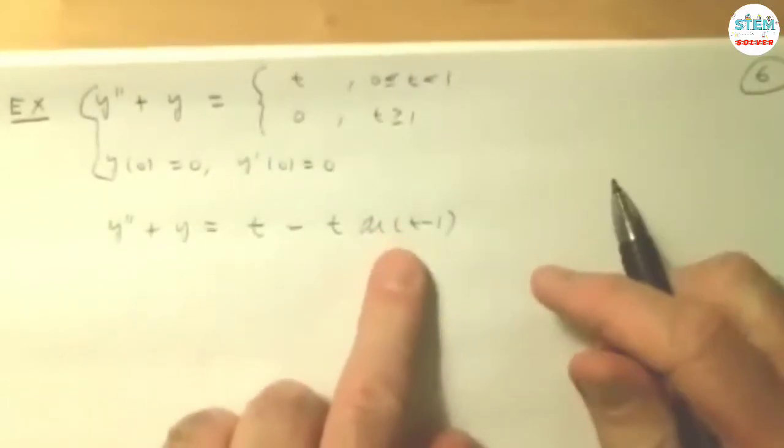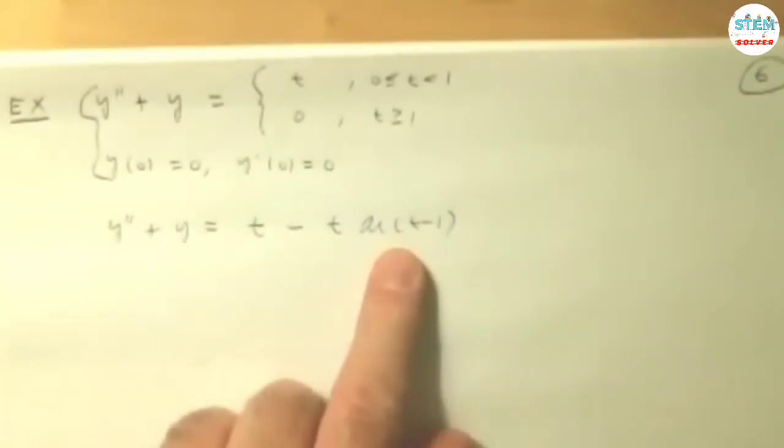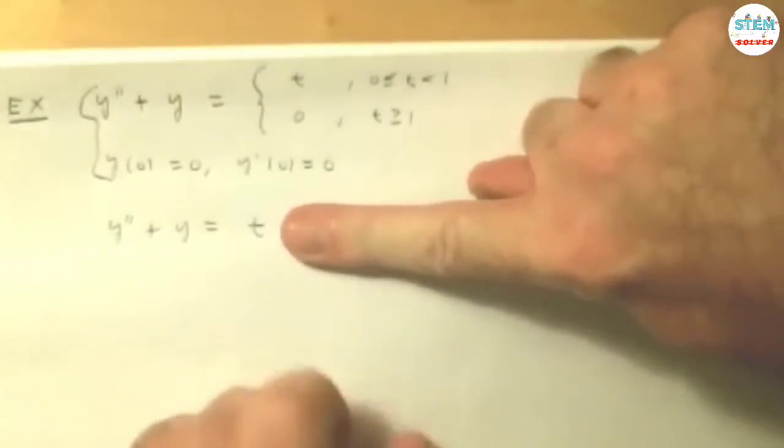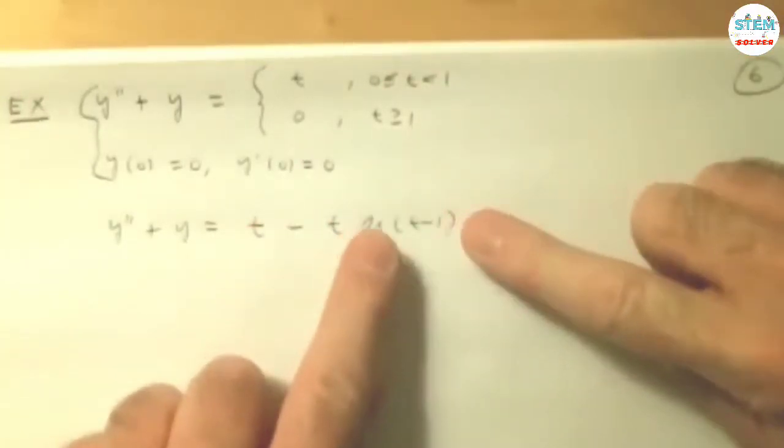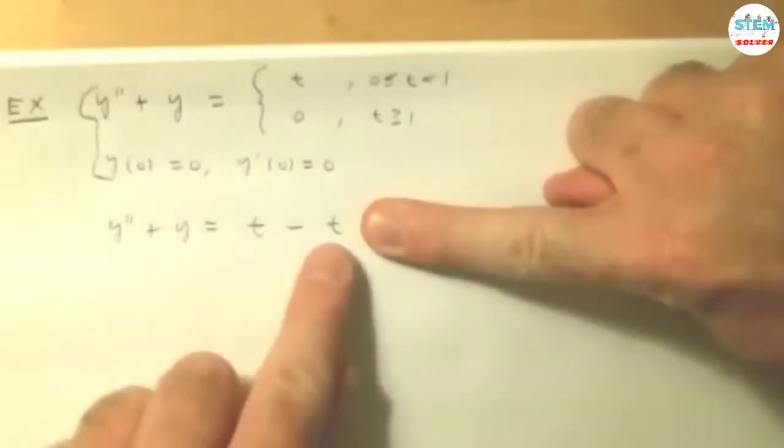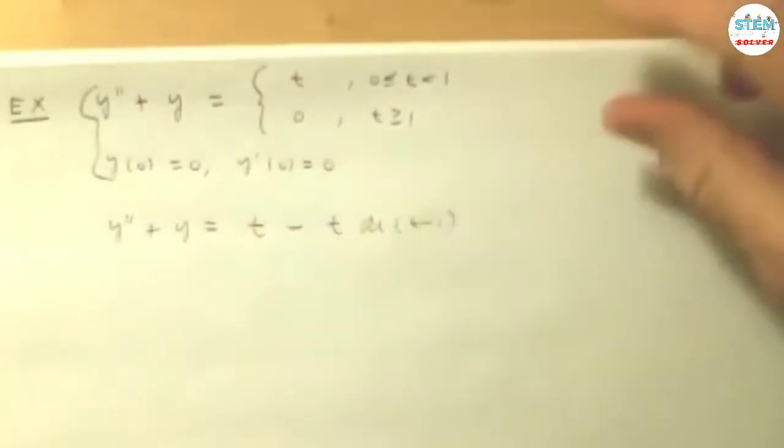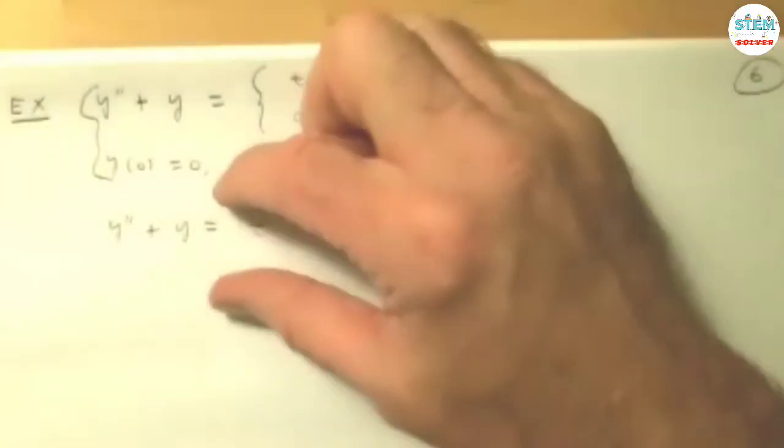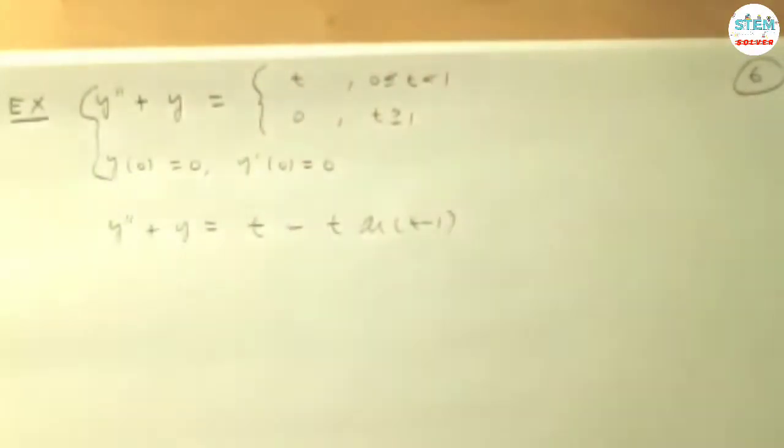And the idea here is that this function is going to be 0 or 1. Before 1, this whole thing is 0, which means this is not there, I just have t. When t hits 1, this thing turns to 1. I get t minus t, which gives me 0. So this is why we're doing the unit step function. We can write this now as one line, which is closer to taking a Laplace transform.